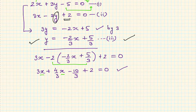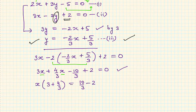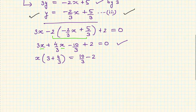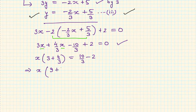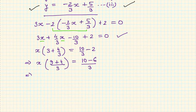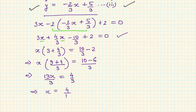Taking x common from the first two terms gives x(3 + 4/3), and transferring constants to the right gives 10/3 - 2. Simplifying: x(9/4 + 4/3) = x(13/3) = (10 - 6)/3 = 4/3. Therefore 13x/3 = 4/3, which means x = 4/13.